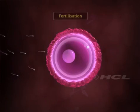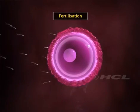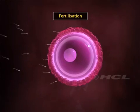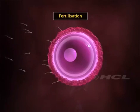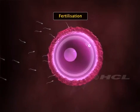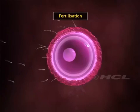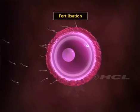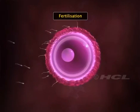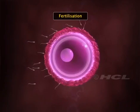The fusion of sperm and ovum is called fertilization. For fertilization to take place, the sperms must be released in the vagina during the period that the egg is alive, that is, within 24 hours after ovulation.